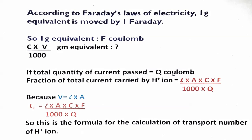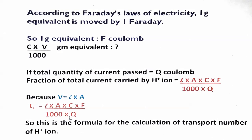If the total quantity of current passed is Q coulombs, then the fraction of total current carried by H+ ions equals C × V × F / (1000) divided by Q. Substituting V = L × A, T-plus equals L × A × C × F divided by 1000 × Q. This is the formula for calculating the transport number or transference number of H+ ions by the moving boundary method.